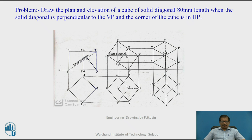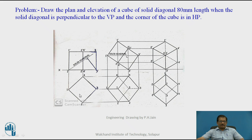We have drawn a square as the top view. Base edge 3-4 is making 45 degrees and edge 1-4 is making 45 degrees. So the square is drawn such that all base edges make 45 degrees with VP. Project point 1 upwards, project points 2 and 4 upwards, and project point 3 upwards. The height equals √3 × base edge, so base edge = diagonal length ÷ √3, and that length has been calculated.